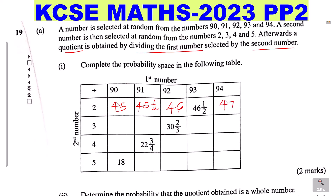Go to the second row. 90 divided by 3 gives 30. Then 91 divided by 3 gives 30 and a third. Then 94 divided by 3 gives 31. Lastly, 94 divided by 3 gives 31 and a third.